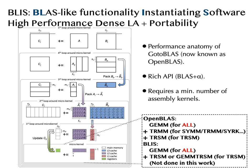Let me give a brief introduction to BLIS. BLIS is the abbreviation of BLAS-like functionality instantiating software, which features high performance and portability. It's based on the performance anatomy of the GotoBLAS, which is now known as OpenBLAS, and has an extended API over traditional BLAS. Like OpenBLAS, it requires a minimal number of assembly kernels, which allows an easier port to other architectures.